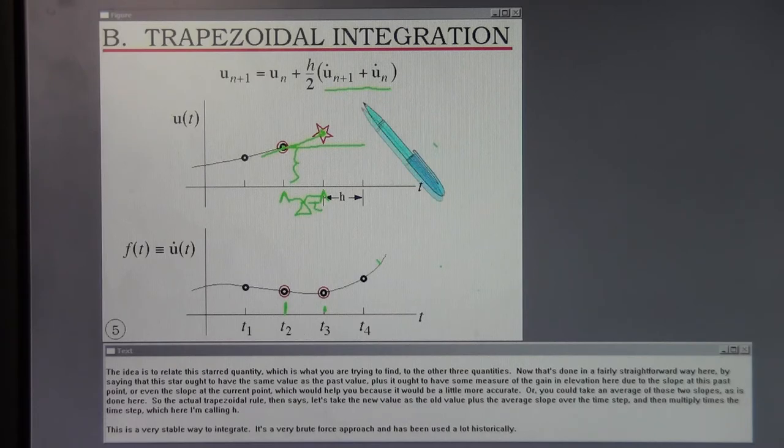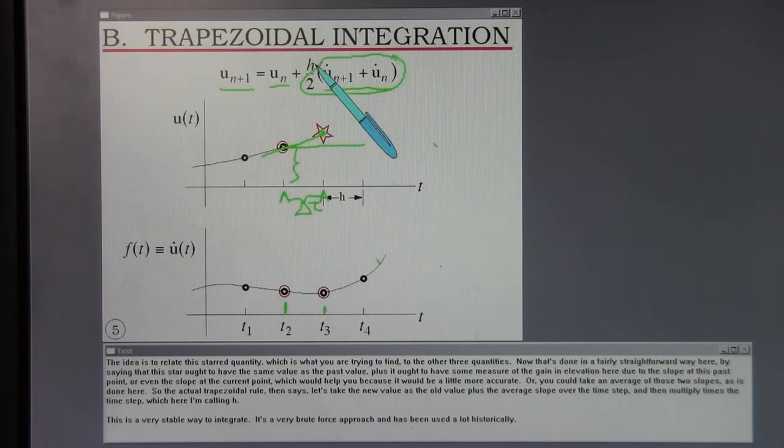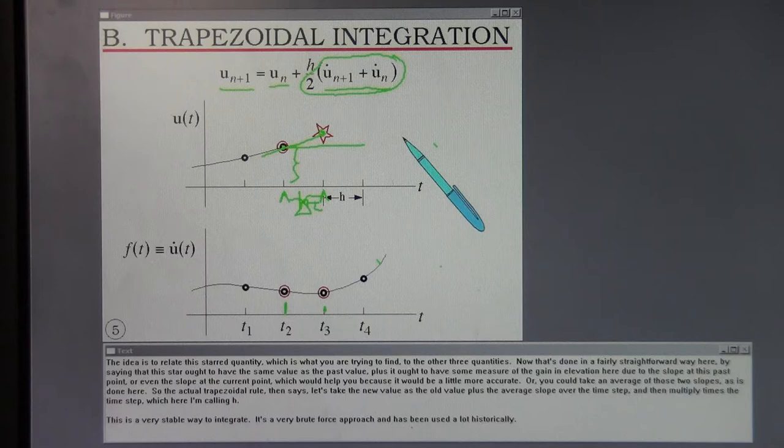Now that's done in a fairly straightforward way here, by saying that this star ought to have the same value as the past value, plus it ought to have some measure of the gain in elevation here due to the slope at this past point, or even the slope at the current point, which would be a little more accurate, or you could take an average of those two slopes. So the actual trapezoidal rule then says, let's take the new value as the old value, plus the average slope over the time step, and then multiplied times the time step, which here I'm calling h.